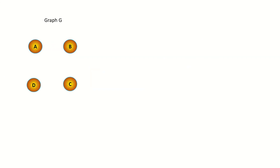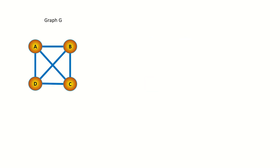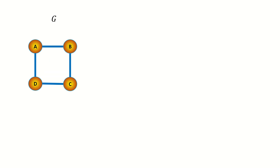What happens though if a graph has no edges? The kth power of a graph with no edges is simply the graph itself. Because according to the rules of the graph power operation, two vertices in the kth power are connected if their distance in the original graph is at most k. In a graph with no edges, the distance between any pair of vertices is infinite or undefined, so we cannot connect any vertices in any power of such a graph. Similarly, the kth power of a complete graph G is the same graph G, as there are no new edges to connect if all vertices are already connected to each other.